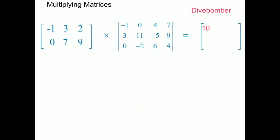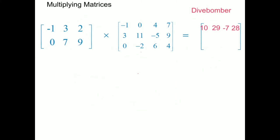The next two values for row 1 work out to be negative 7 and 28. Now for row 2, with elements 0, 7 and 9: row 2 column 1 gives 7 times 3 which is 21 (the 0 times negative 1 and 9 times 0 don't affect it), so we get 21. That goes into row 2 column 1 of the answer matrix.